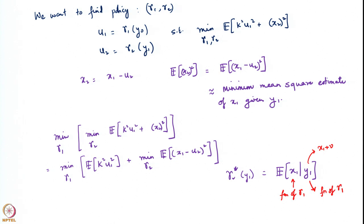But the problem here is that x_1 is not a constant as far as the optimization happening in this problem. The x_1 here is itself chosen through our decision variable gamma_1. Once we write this out explicitly we see that x_1 is really gamma_0.